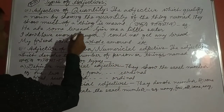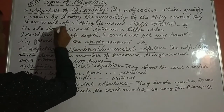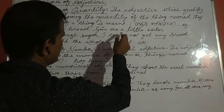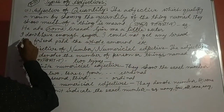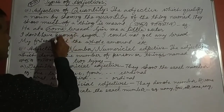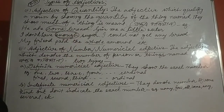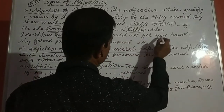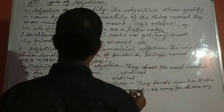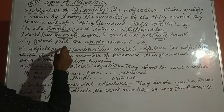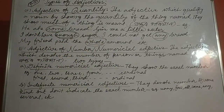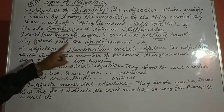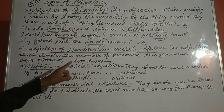He had some bread. Give me a little water — little shows quantity of water. I don't have enough sugar — enough shows the quantity. I could not get any bread — any shows quantity. My friend fed the whole amount. So words like some, little, enough, any, whole, etc. are adjectives of quantity.